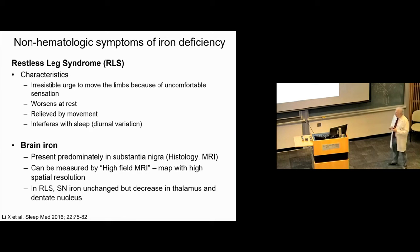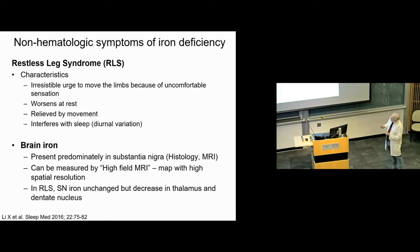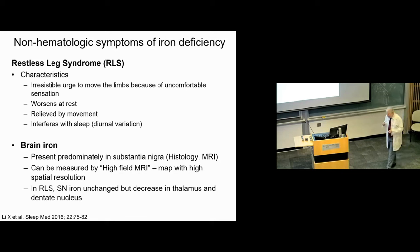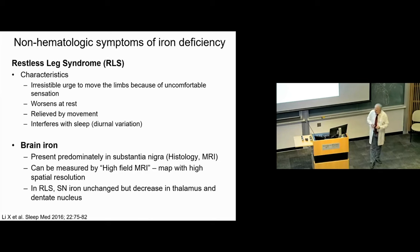The other symptom to mention is restless leg syndrome. There are four characteristics almost universally present: an urge to move your limbs because of a sensation like bugs crawling, worse at rest, generally relieved by movement, and it interferes with sleep. These patients are often seen in sleep centers, and sleep physicians know that iron deficiency is one of the main — though not the only — causes of restless leg syndrome. Most of the iron in our brain is in the substantia nigra, but no specific iron-dependent enzyme deficiency has yet been confirmed.